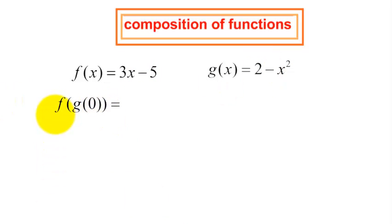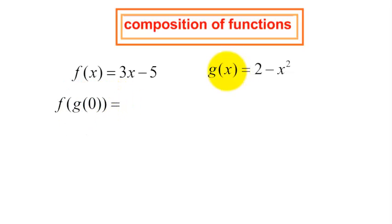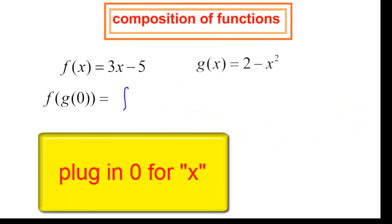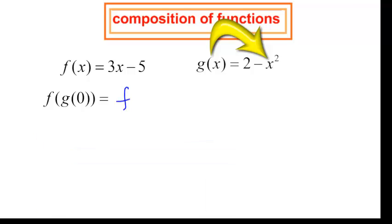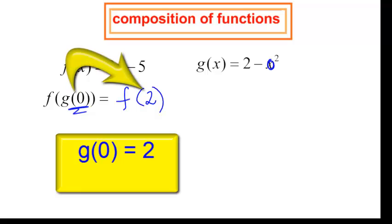I want you to find f at g at 0. First, I need to find g at 0. Wherever I see the variable x, I am going to plug in 0. So that will be 2 minus 0 squared, which is just 2. So g at 0, when I plugged in 0 for the variable, the answer was 2.